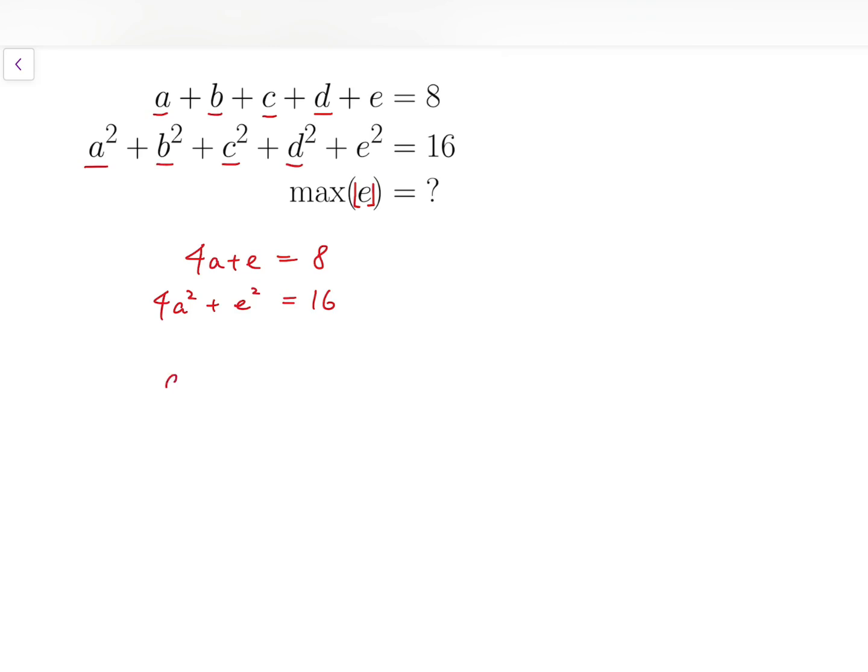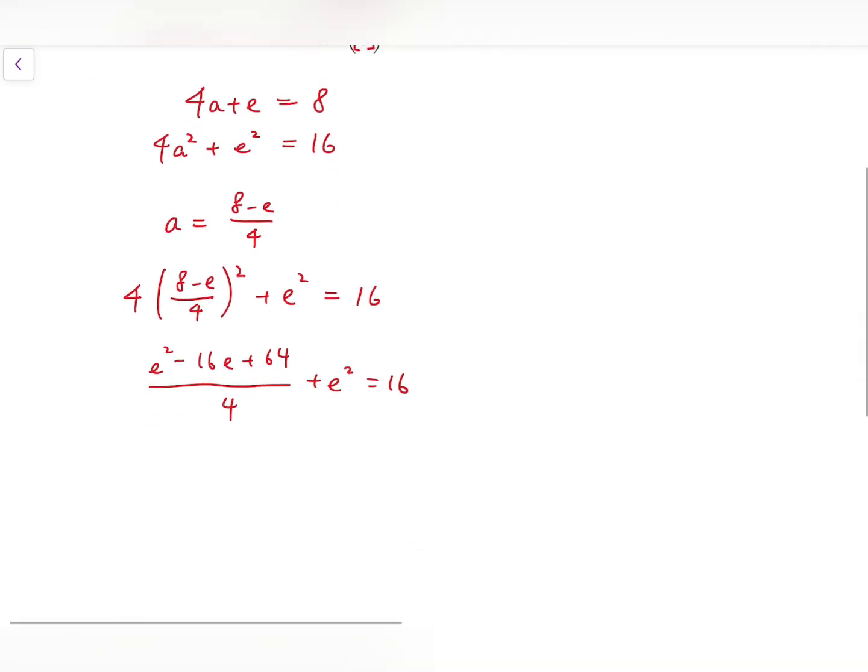So 4 times 8 minus E over 4, all squared, plus E squared equals 16. Then simplifying, we have E squared minus 16E plus 64, all divided by 4, because 4 over 4 squared is just a 4 at the bottom, plus E squared equals 16. And eventually, we have 5E squared minus 16E plus 64 equals 64.